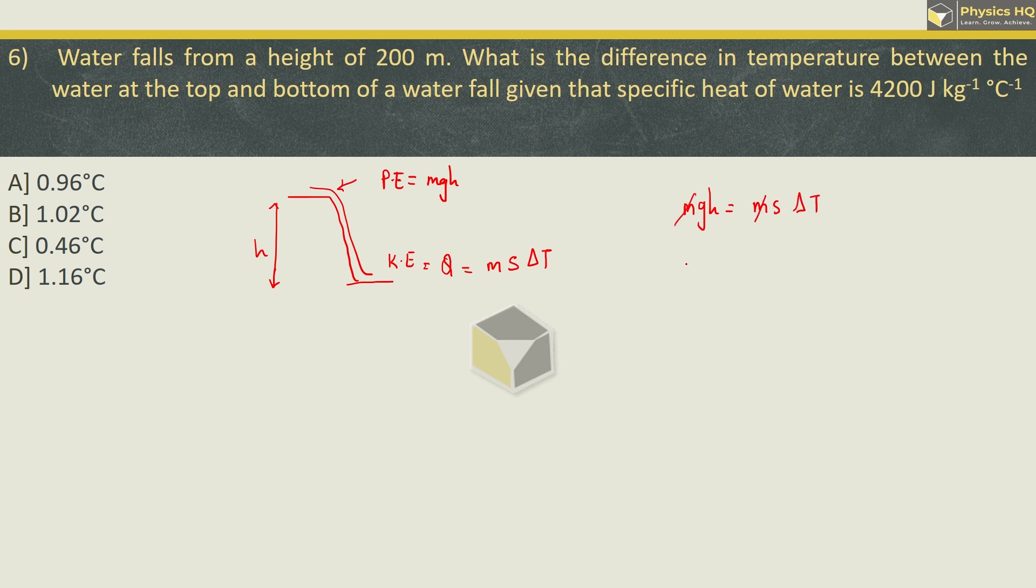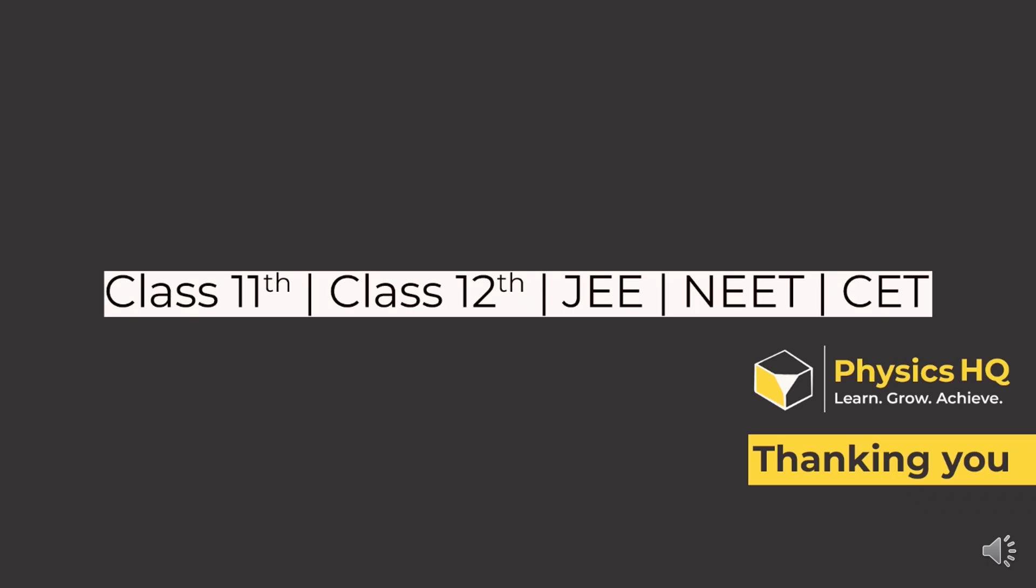Mass will cancel, we are supposed to find change in temperature ΔT, so this is given by gh/s. G value is 9.8, H is 200, and specific heat of water is 4200. The change in temperature: this will be 21. So we get 9.8/21. When you solve this, approximately 0.46 degree Celsius. So the correct option is option C.